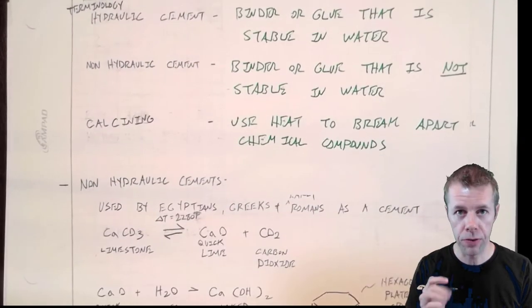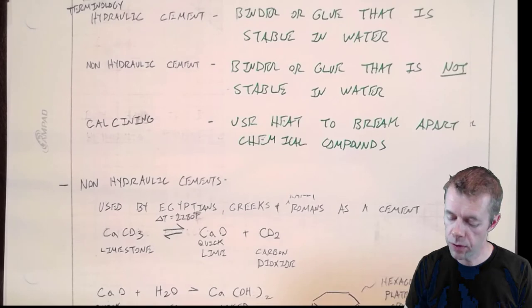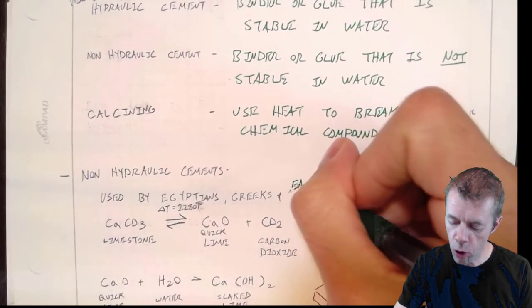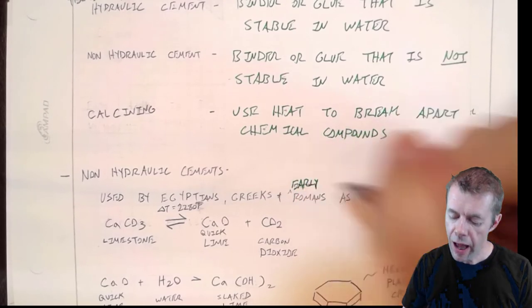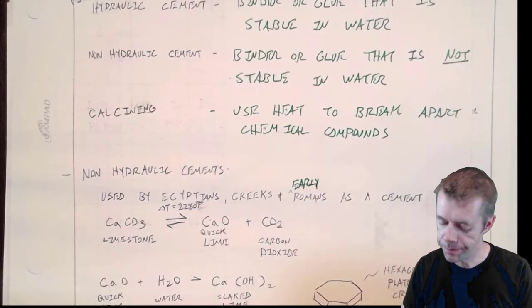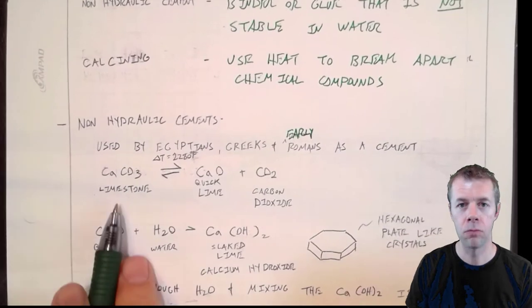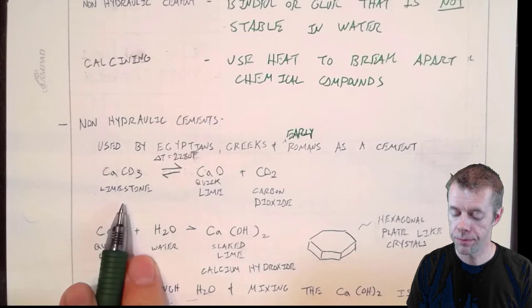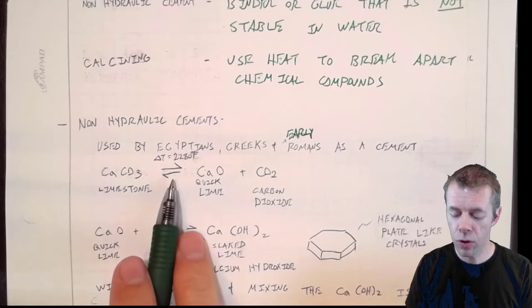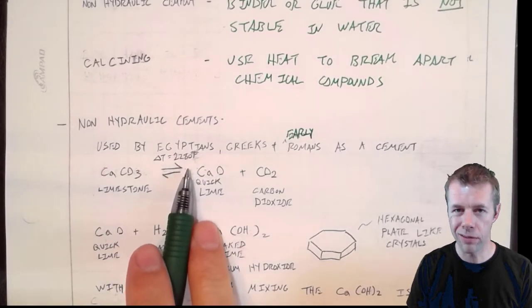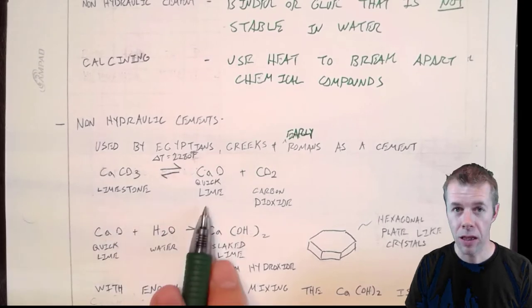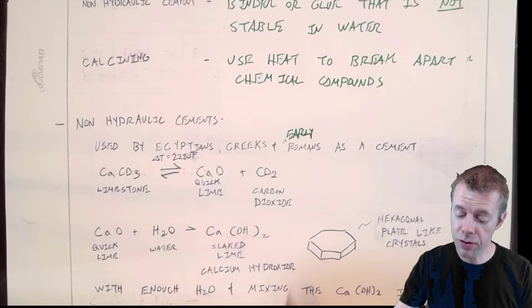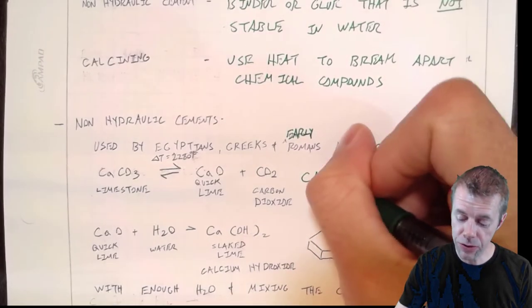First, let's start out talking about the ancient cements, the non-hydraulic cements. These were used by Egyptians, by the Greeks, by the early Romans as a cement. How did they make them? Well, they took limestone. What's limestone? It's a rock. Calcium carbonate, a rock. And they cooked it to about 2,300 degrees Fahrenheit, and they made lime and carbon dioxide. This process is called calcining.